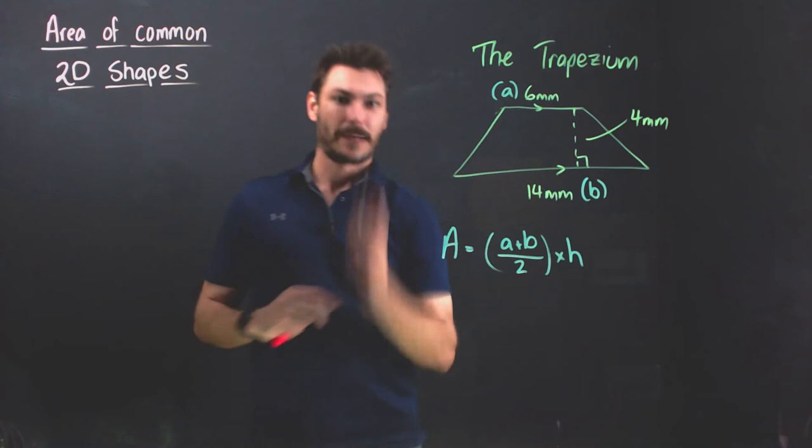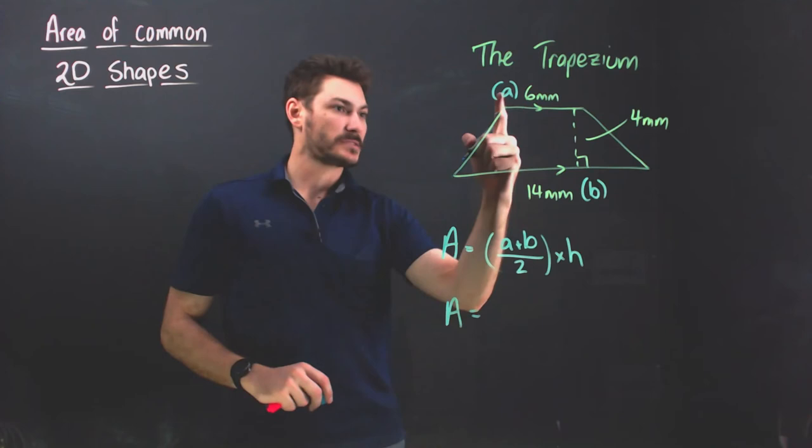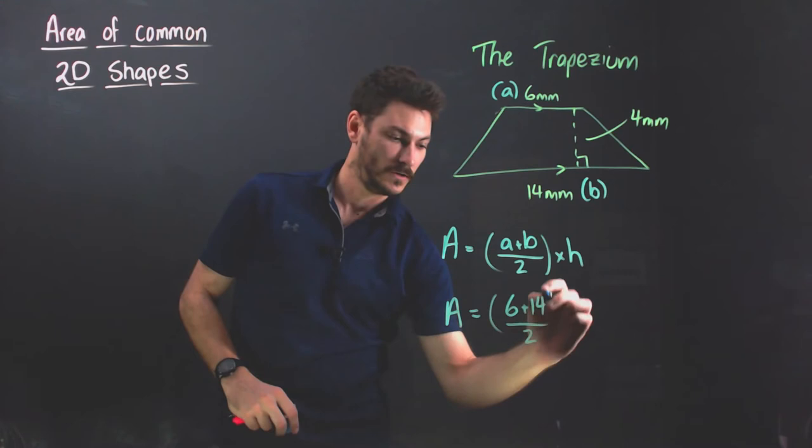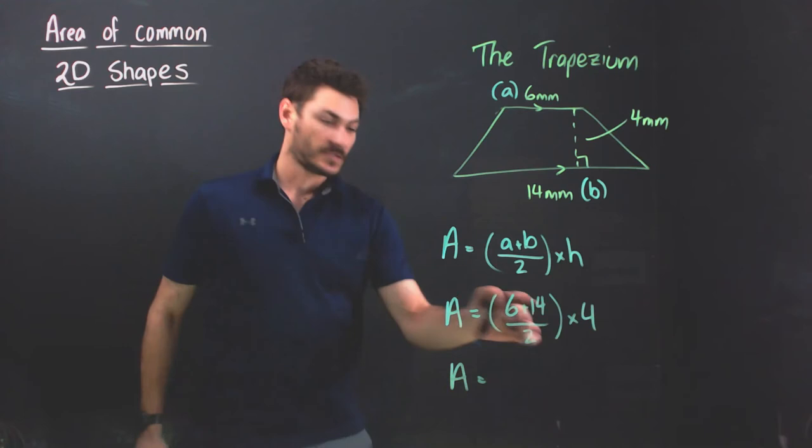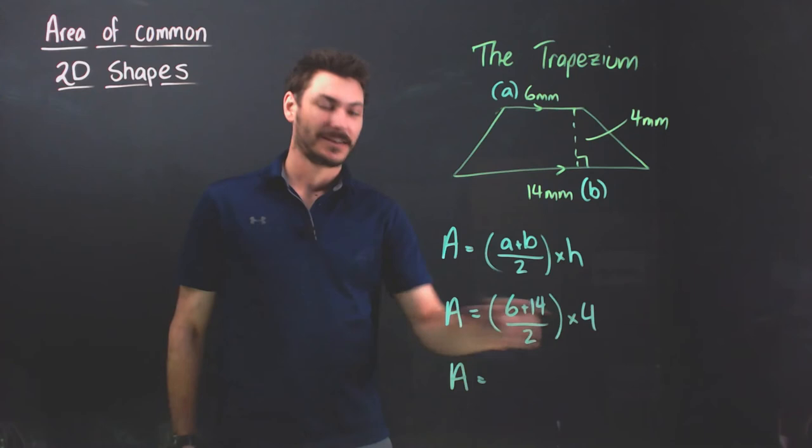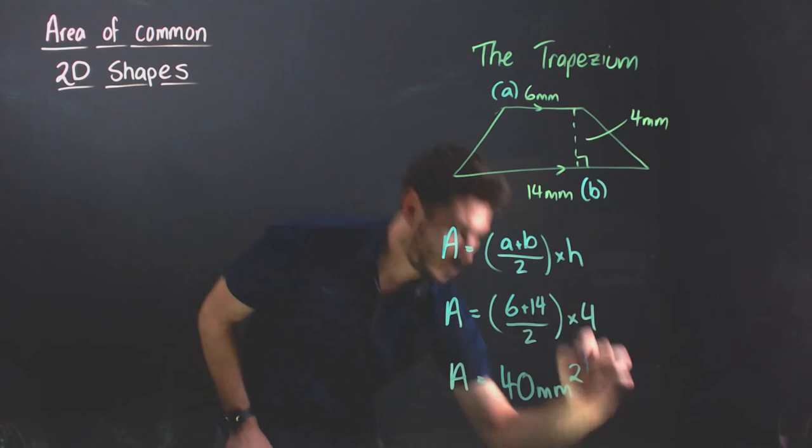To sub in our values, I've got area equals A plus B, so six plus fourteen, divided by two, times by how high it is which is four millimeters. I could just put all of that in my calculator or do a little bit of mental arithmetic here. Six plus fourteen is twenty, twenty divided by two is ten, and ten times four is forty. So I get forty millimeters squared, that's my area of my trapezium.